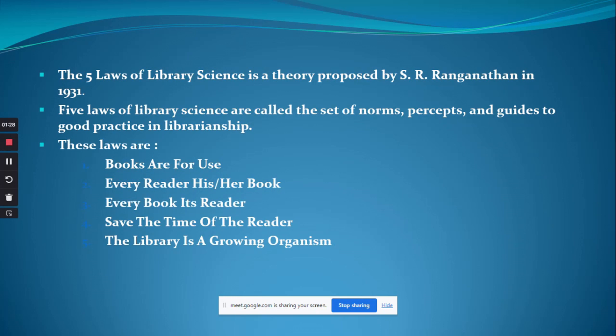The 5 Laws of Library Science is a theory proposed by Dr. S.R. Ranganathan in 1931. These laws are called the set of norms, prospects and guides to good practice in librarianship. Dr. Ranganathan conceived the first laws of library science in 1924, and they were first published in his classic book entitled '5 Laws of Library Science' in 1931.